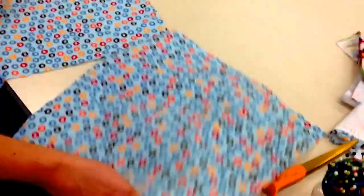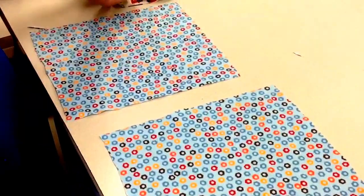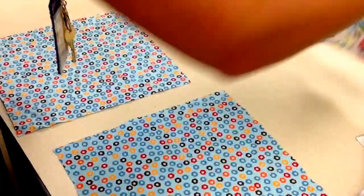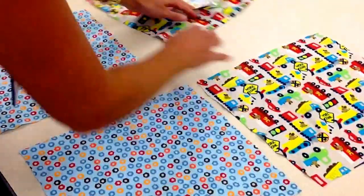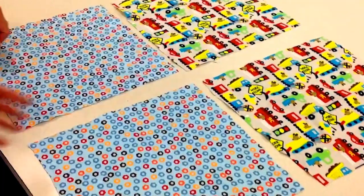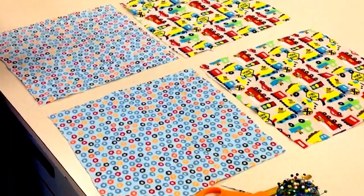So now I have four squares when you open up your pieces. You should have four squares. I did this to both of my fabrics so I'm able to now create my patchwork.